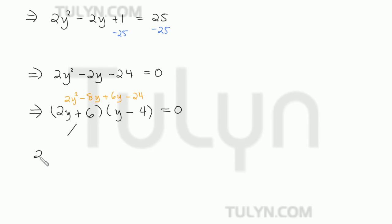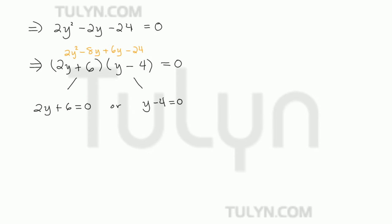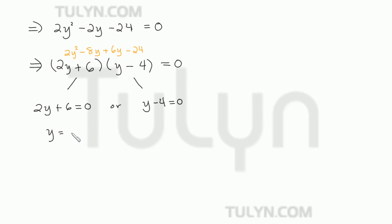So using the zero factor property, then 2y plus 6 is equal to 0, or y minus 4 is equal to 0. So y is equal to negative 6 over 2, which is just negative 3, or y is equal to positive 4.